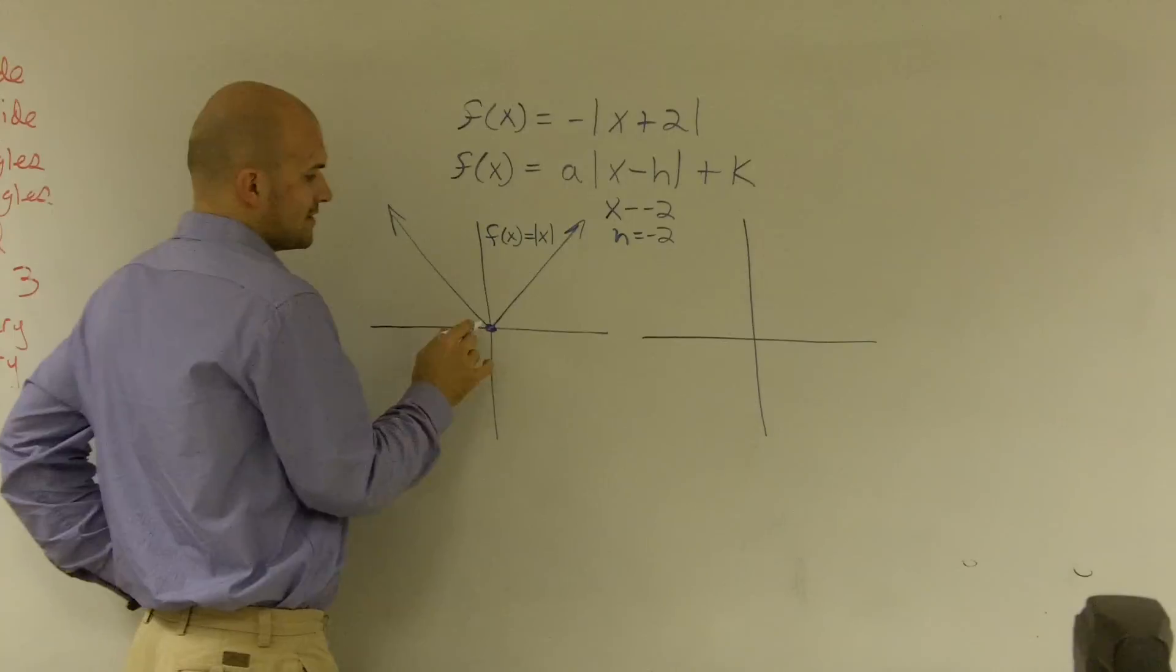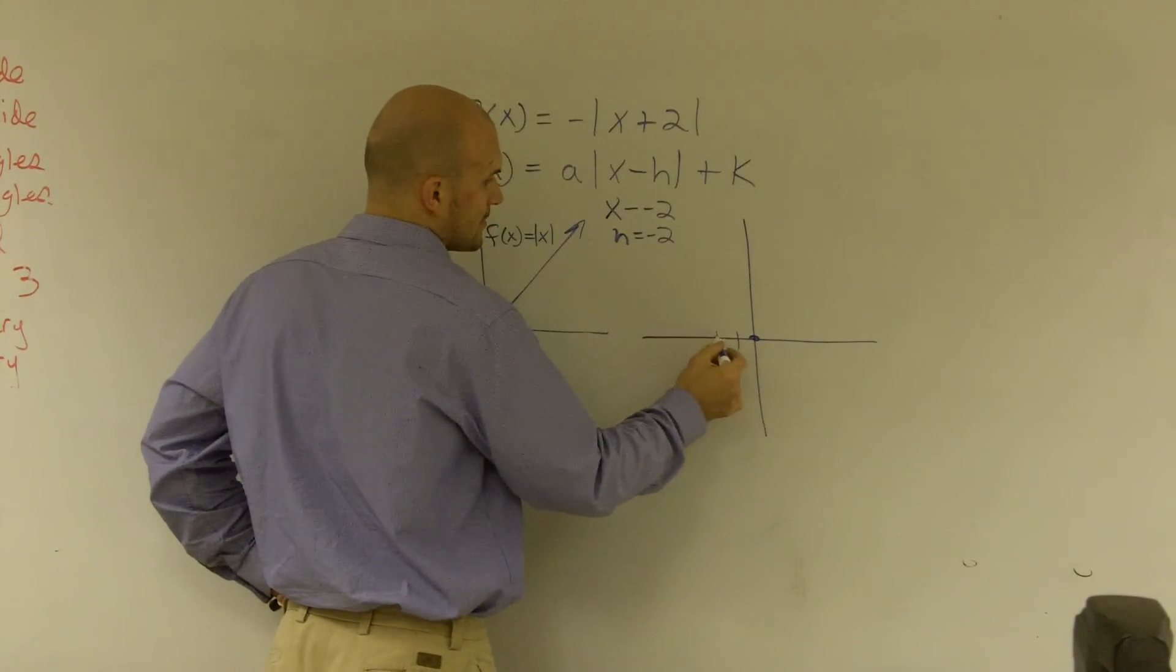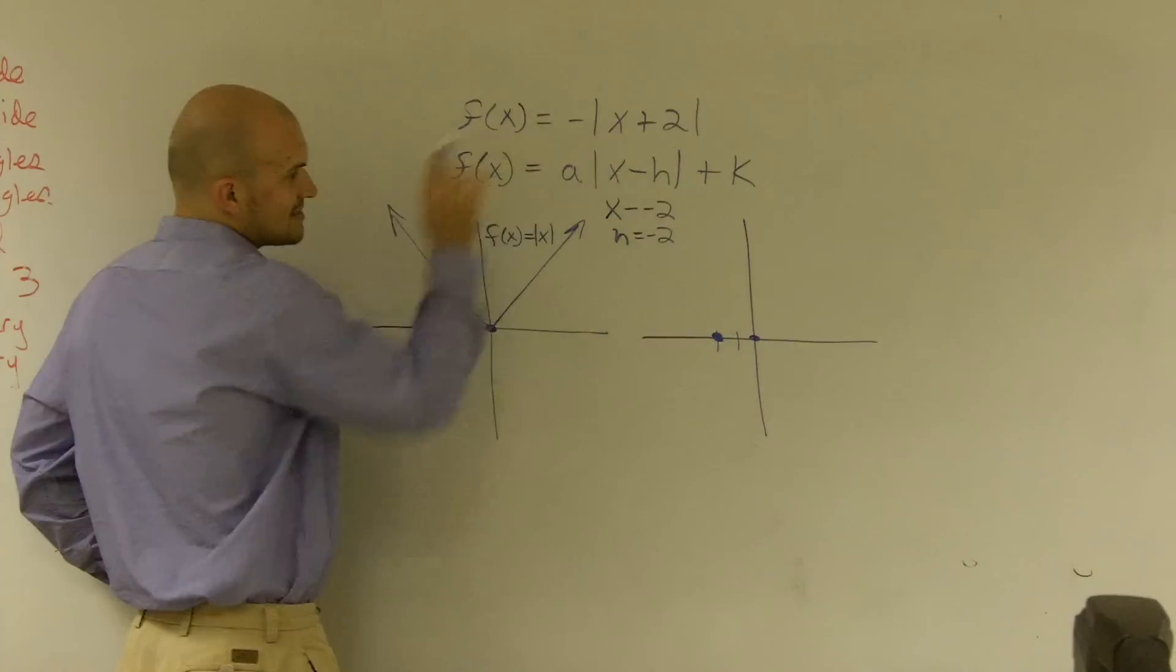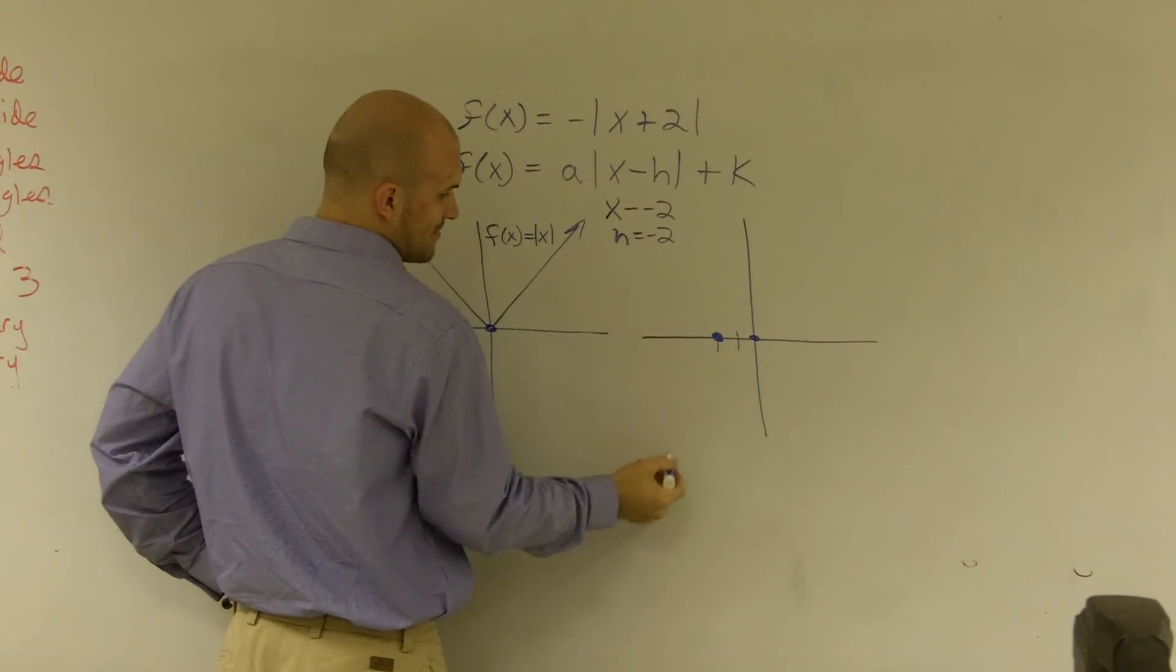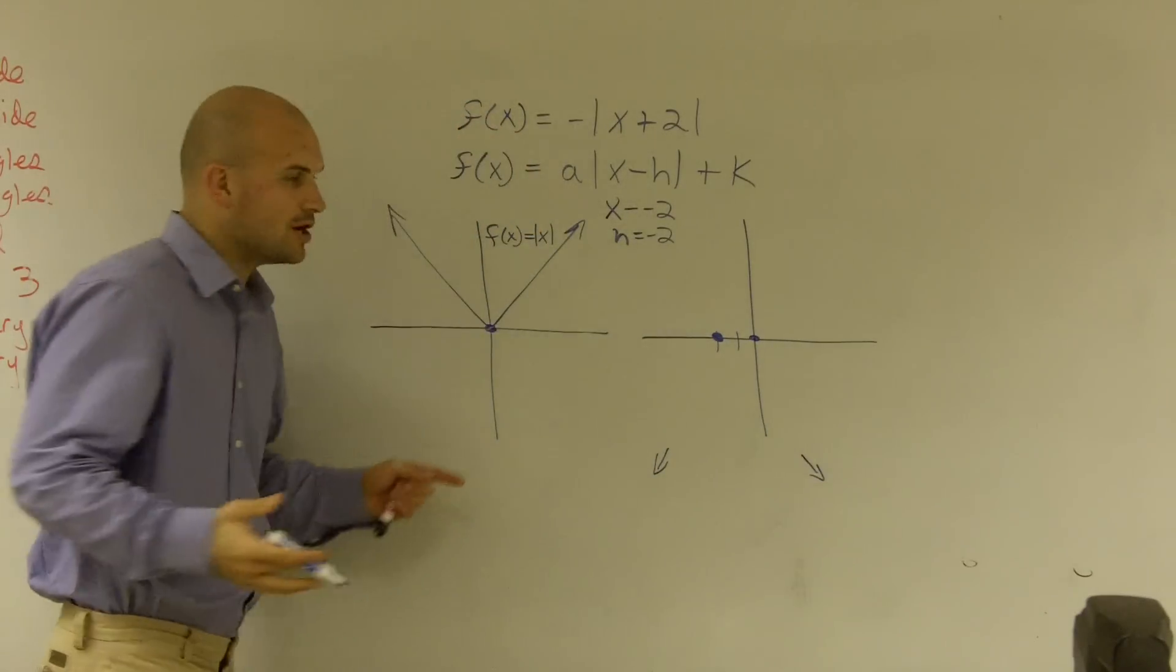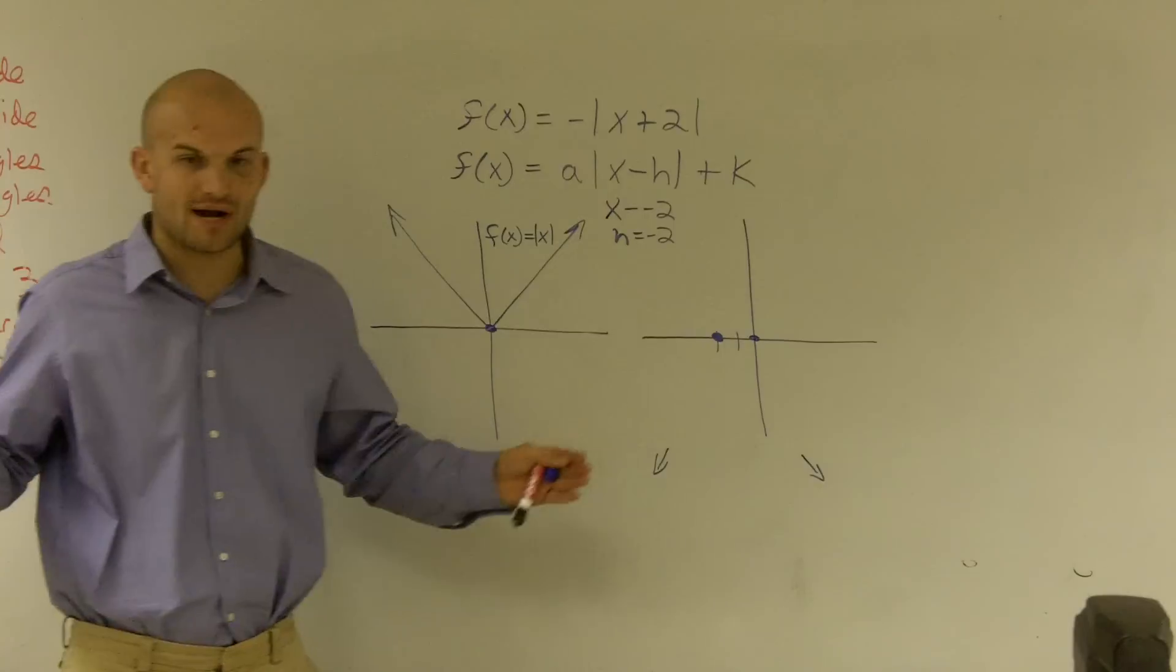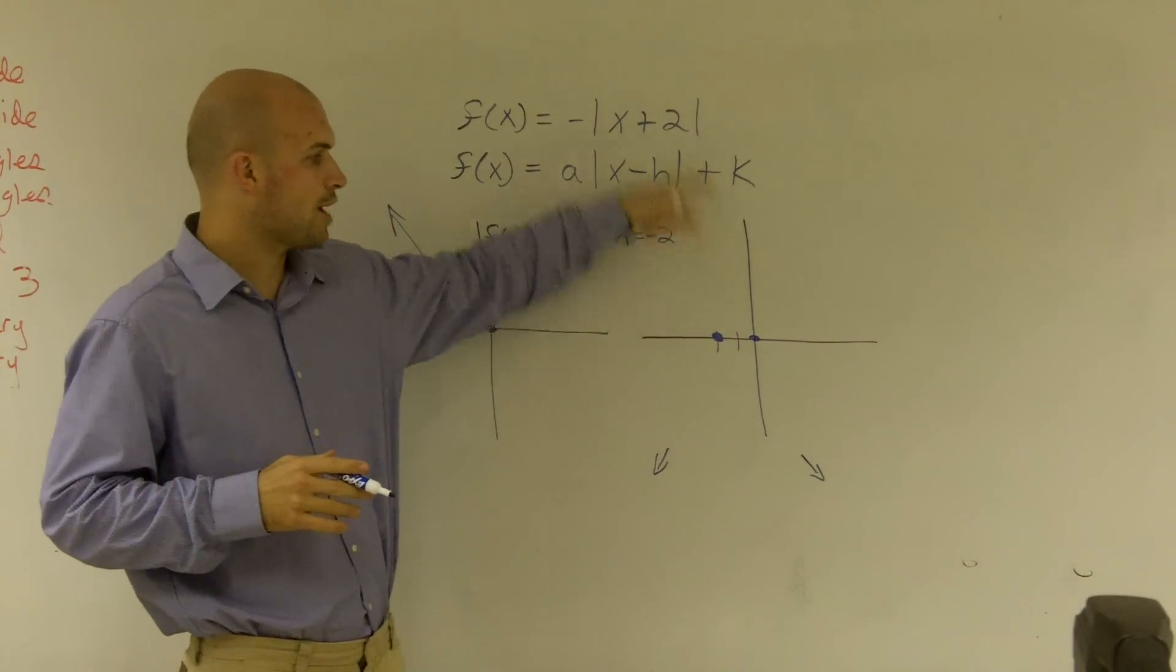So all I know here is my graph, which used to be at (0, 0), is now going to be shifted two units to the left. I also know since this is negative, this whole graph is going to be reflected about the x-axis. So I'm going to have an end behavior that's going to go down and down. But I don't know if it's going to be stretched or compressed. I know I'm not going to move my graph up or down at all.